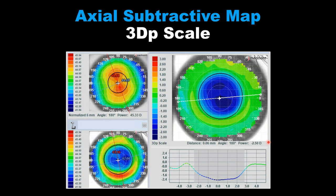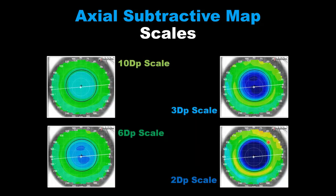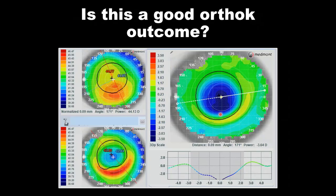For those of you who do orthokeratology, the subtractive map is a very critical piece of analysis you want to do with all of your effects. For more information on orthokeratology analysis with your Medmont, talk to your Medmont distributor or go to the Medmont website — there are numerous videos related to pre-ortho-K analysis as well as post-ortho-K analysis. You see the value of having multiple scales. If you have a patient with a 10-diopter effect, you're going to want a 10-diopter scale. If you have a 6-diopter effect, alter and tighten that scale to be closer to the effect you're creating. Medmont makes it very easy to go from one to the other.